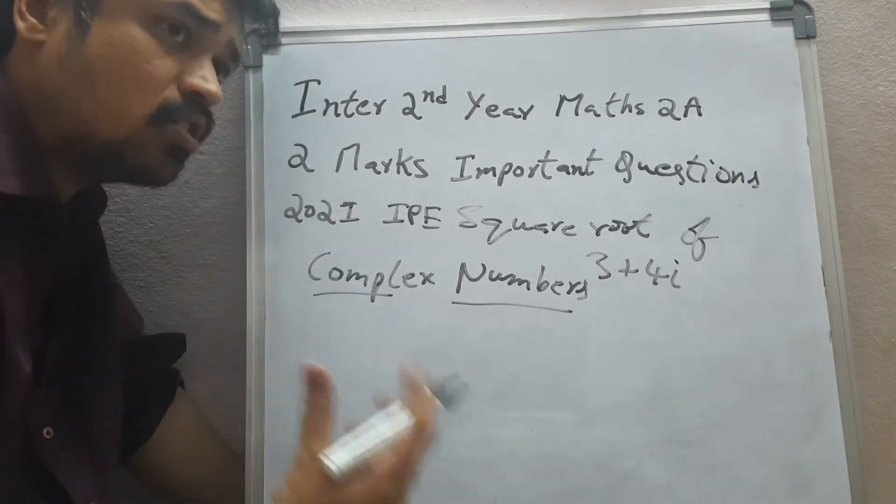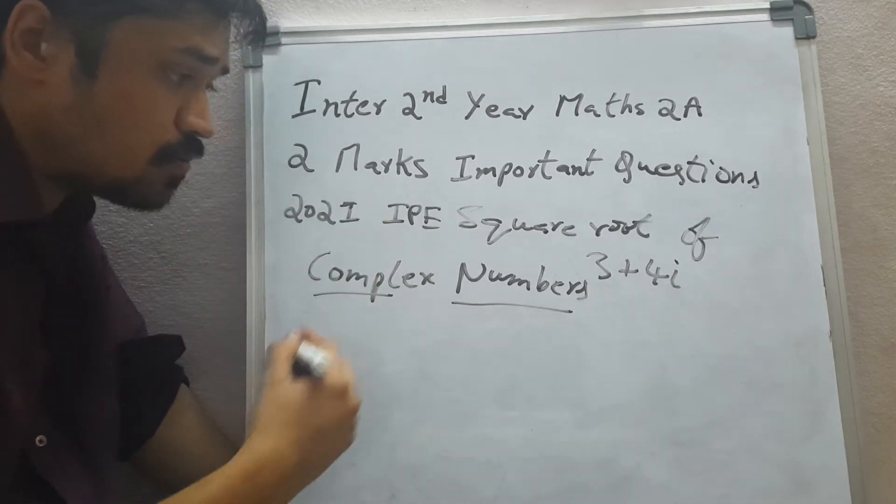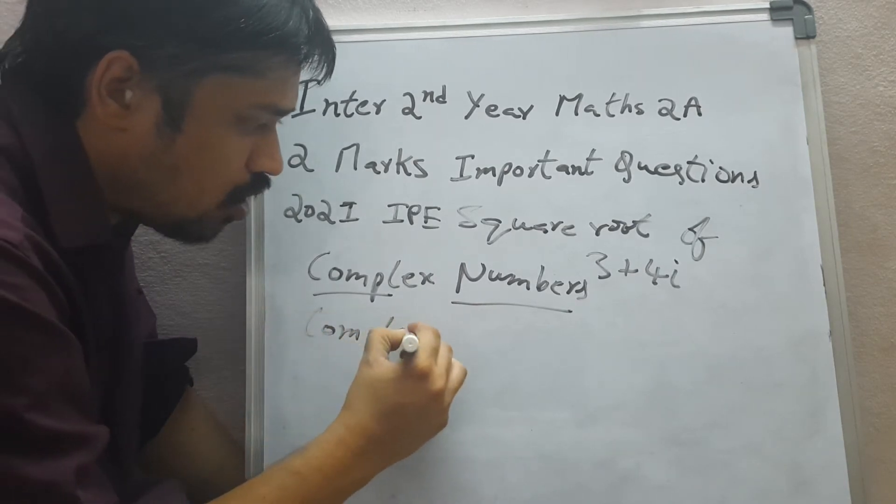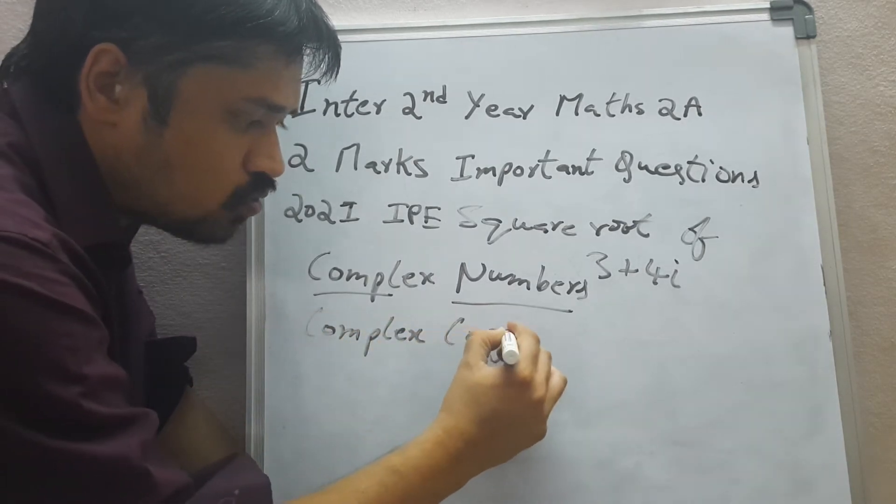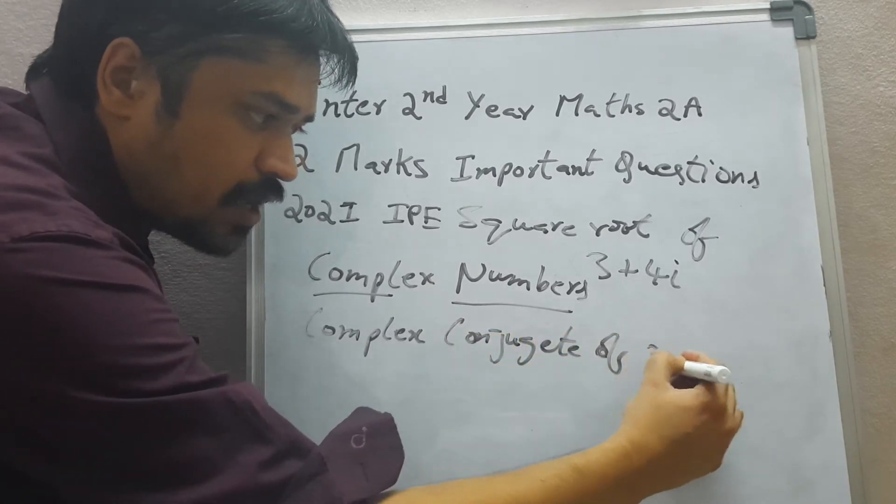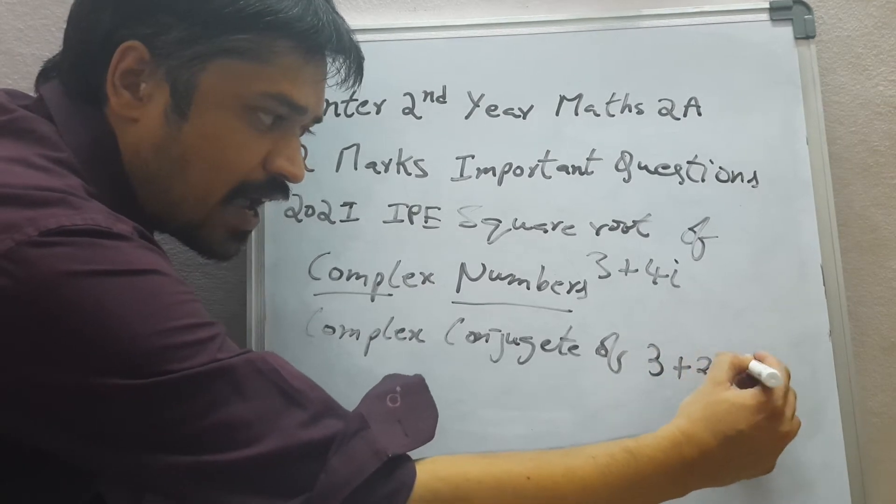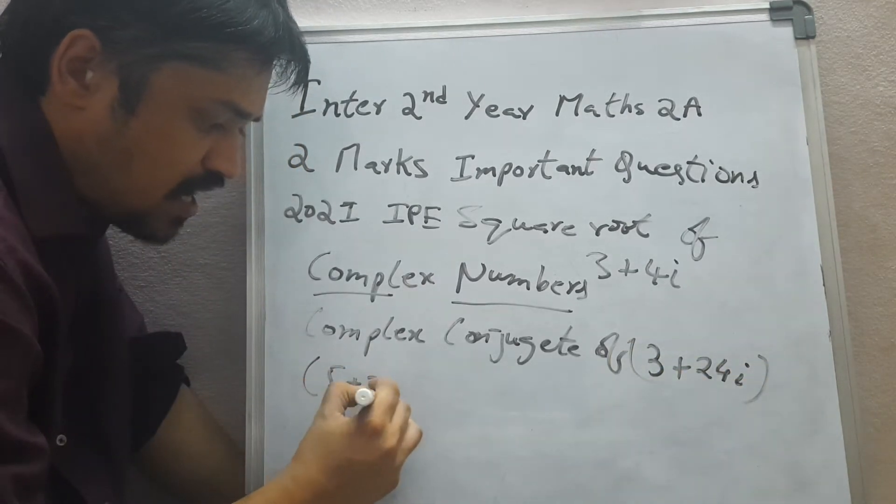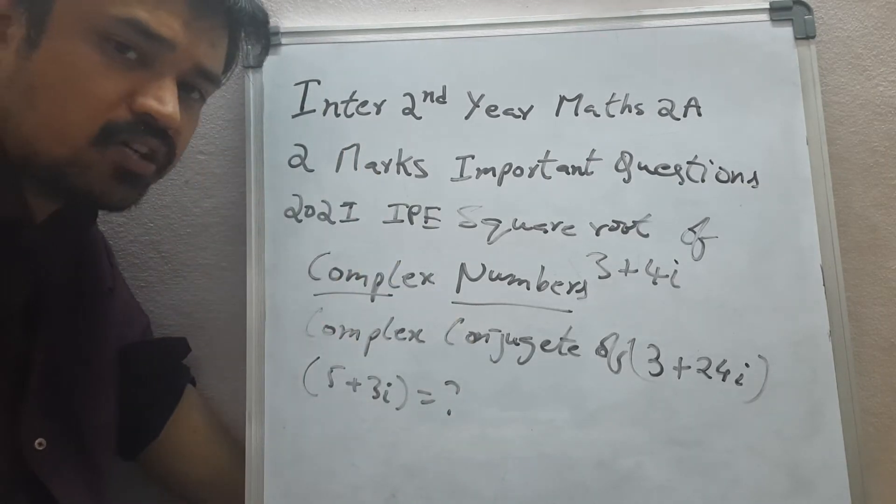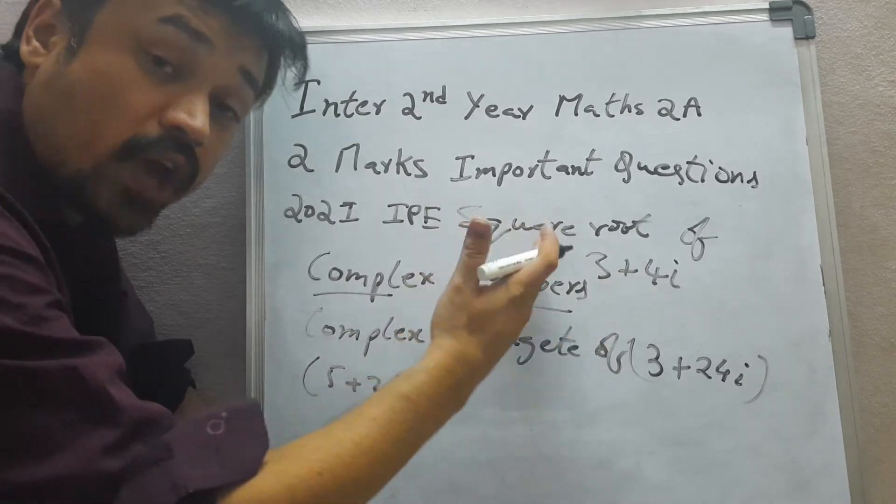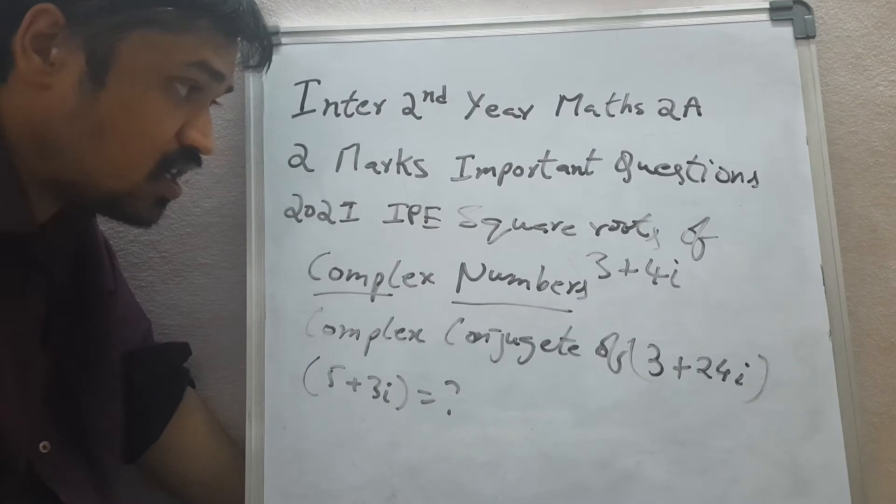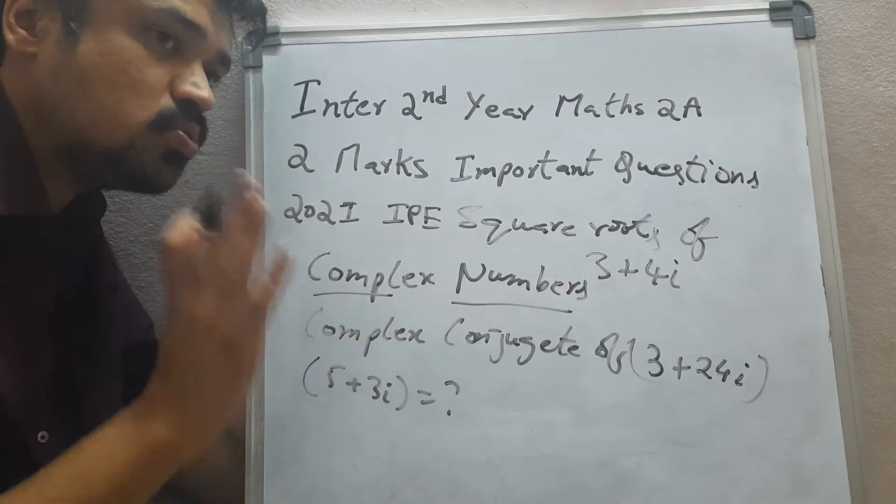And the most important concept, one of the 2 marks important concept is nothing but complex conjugate. The complex conjugate of something like (3 plus 24i) into (5 plus 3i) equals to how much. You need to find this particular complex conjugate, or the square root of 3 plus 4i. The complex numbers in Maths 2A is very important.